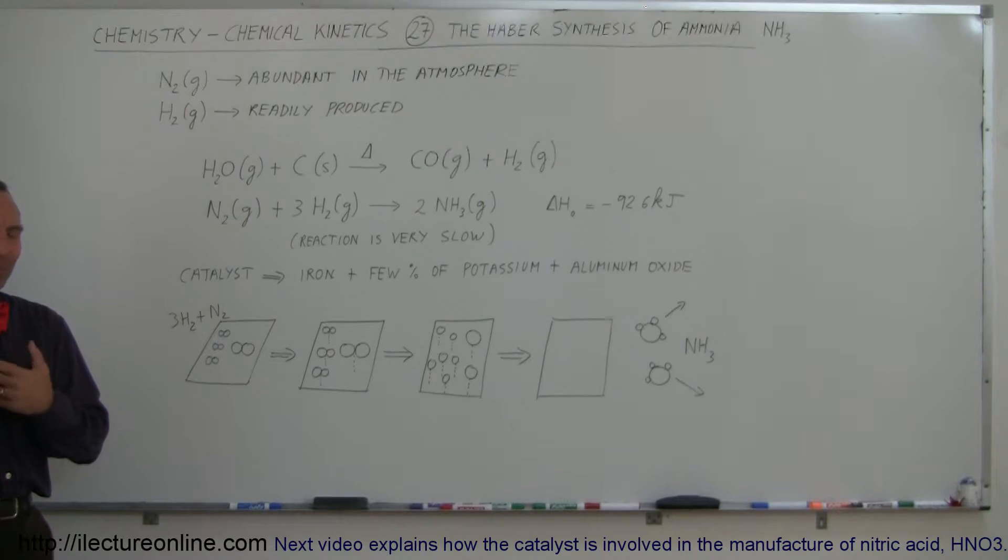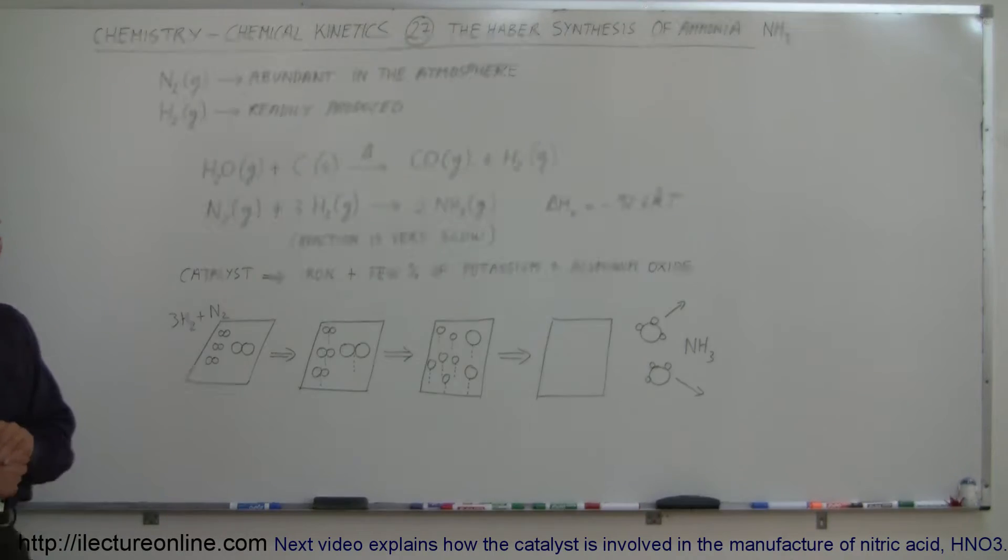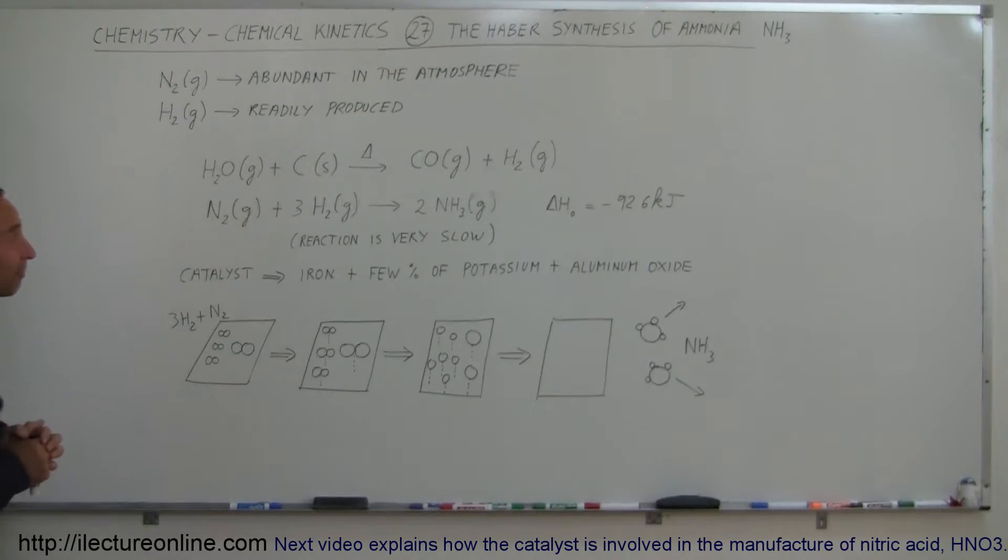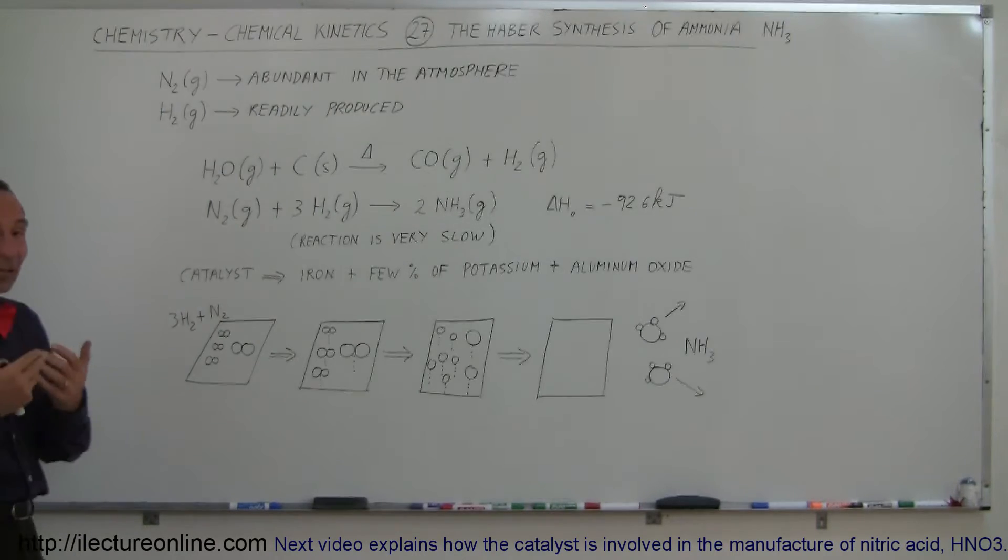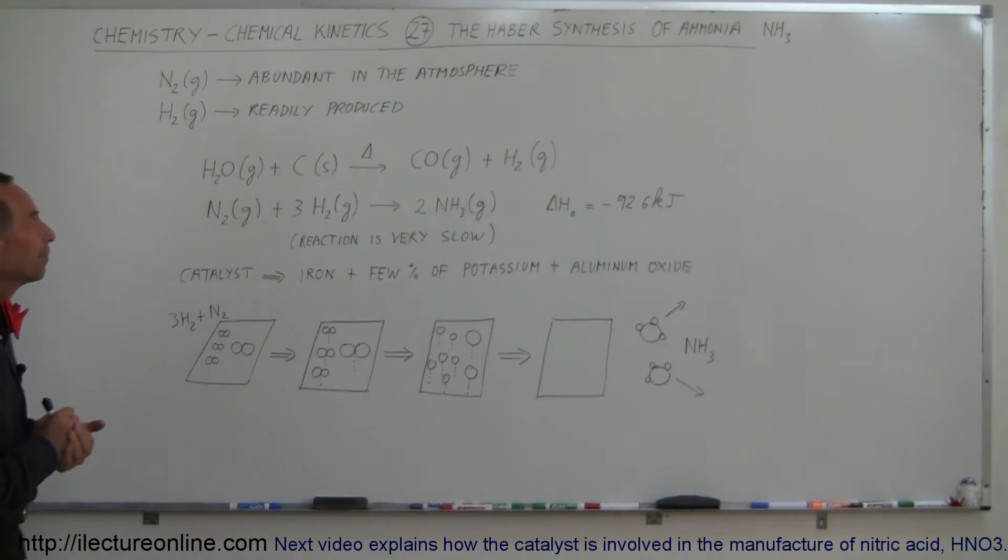Ammonia is an industrial product that we produce billions of tons of, maybe not quite billions of tons, but we produce a whole lot of this stuff. So it's important to get this reaction to take place very quickly. Now, we have a little bit of a problem with that.